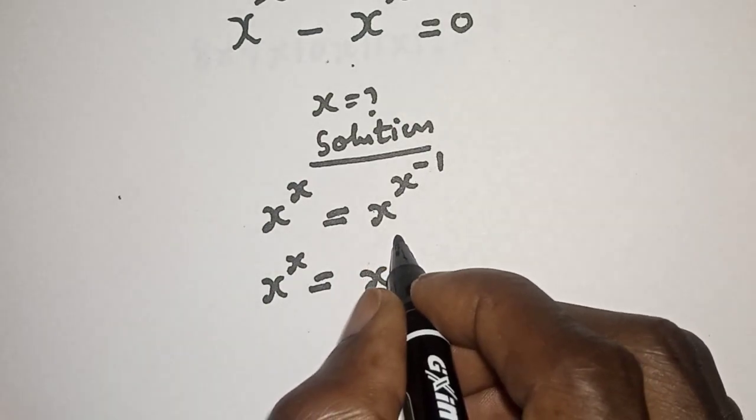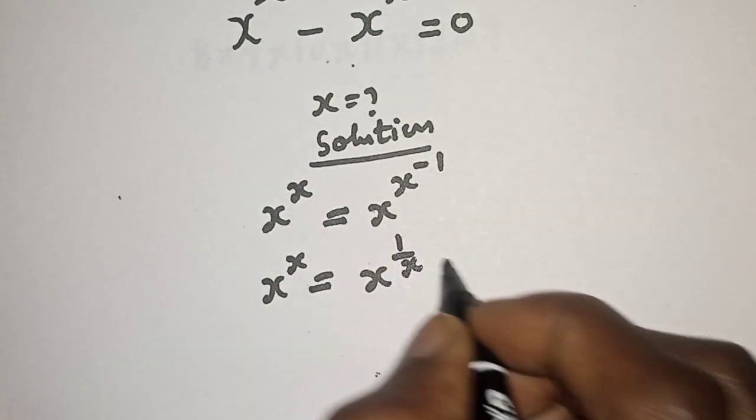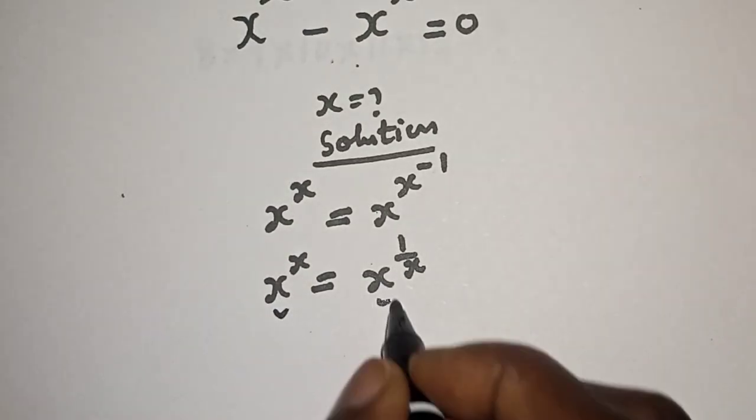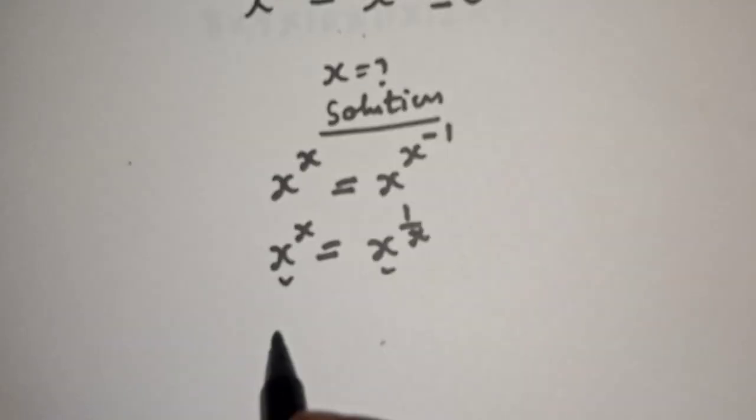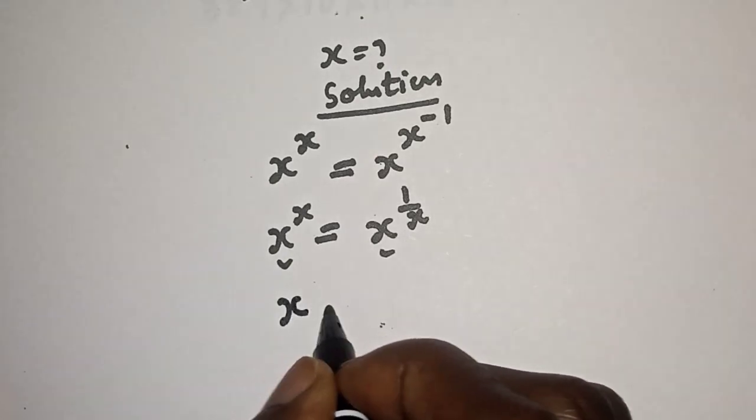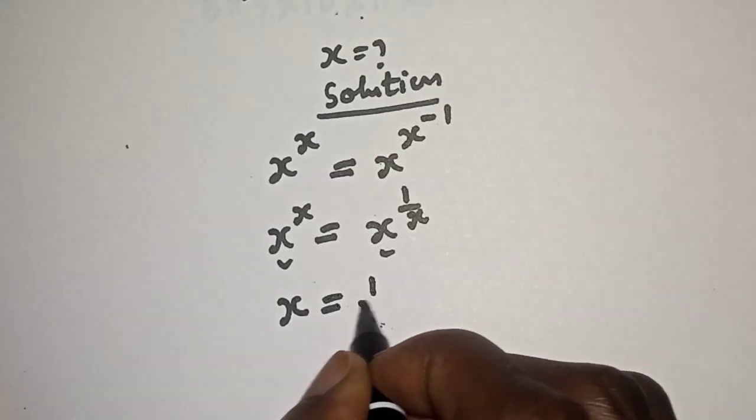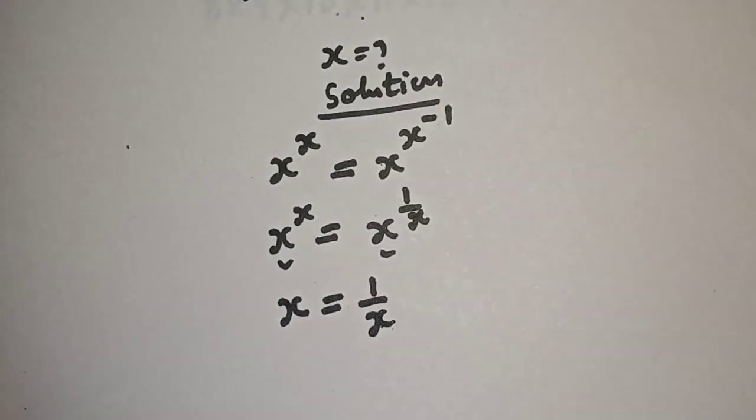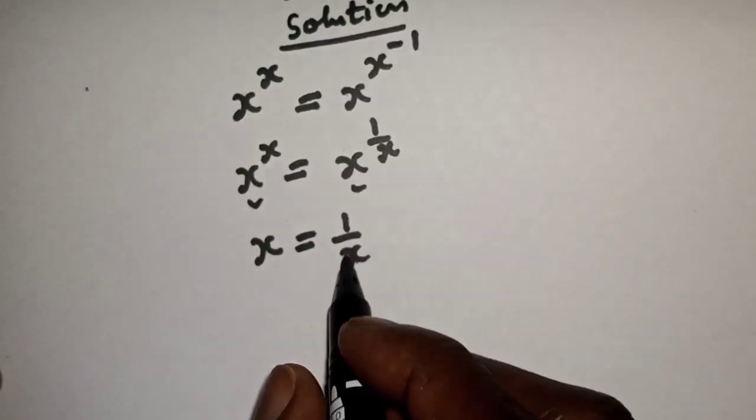Can be written as one over s. Now they have the same base, therefore we work with exponents. S is equal to one over s. Now let's cross multiply.